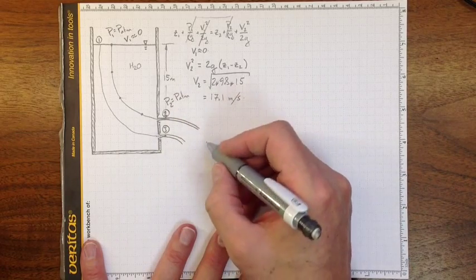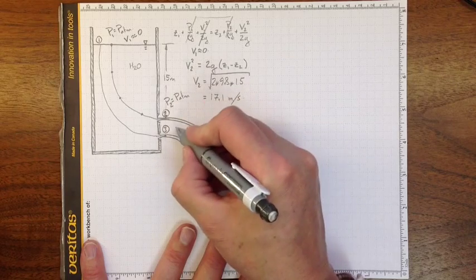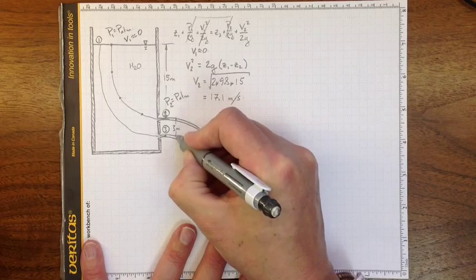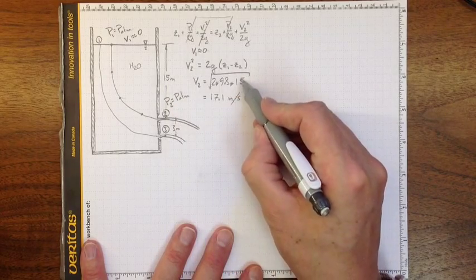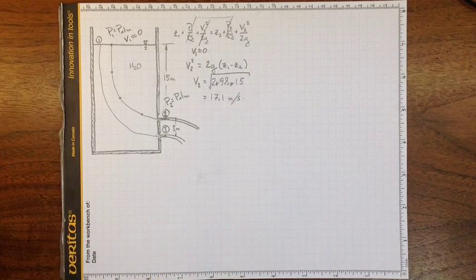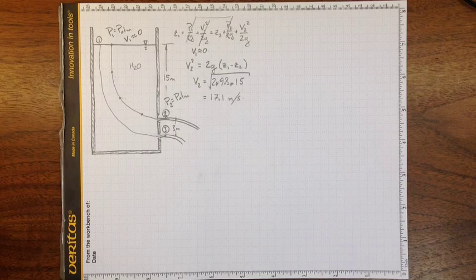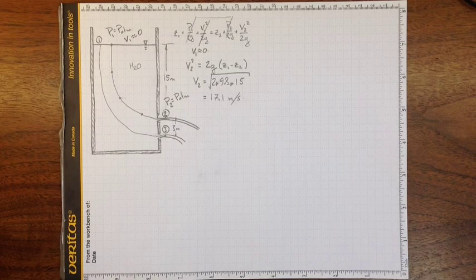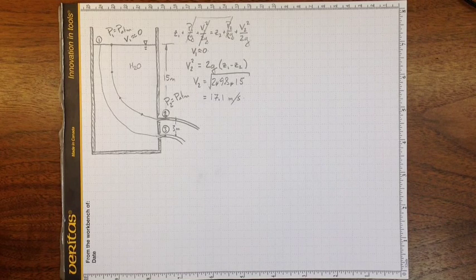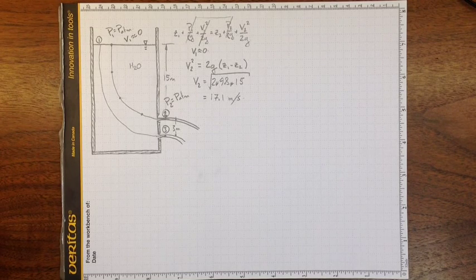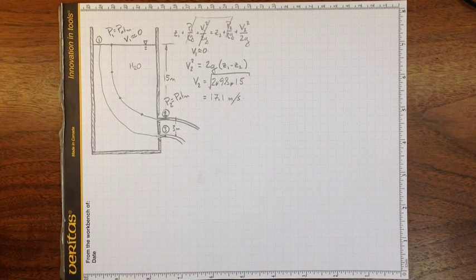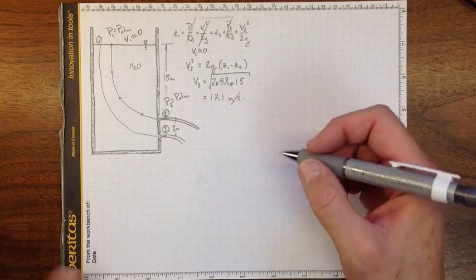So this might be another 3 meters down. And I'd have 18 meters instead of 15 meters in this equation. And 2 times 9.8 times 18 meters this time gives me 352. Square root gives me 18.8 meters per second.